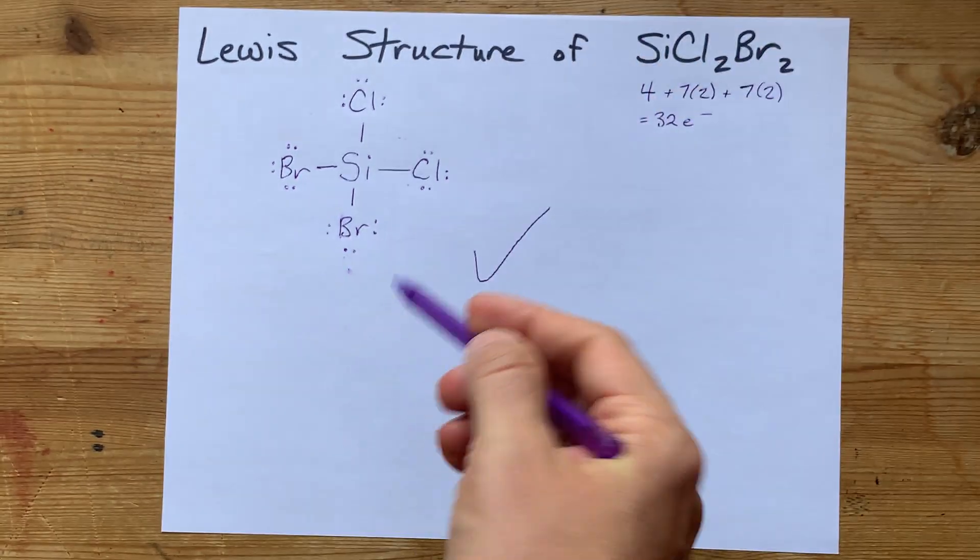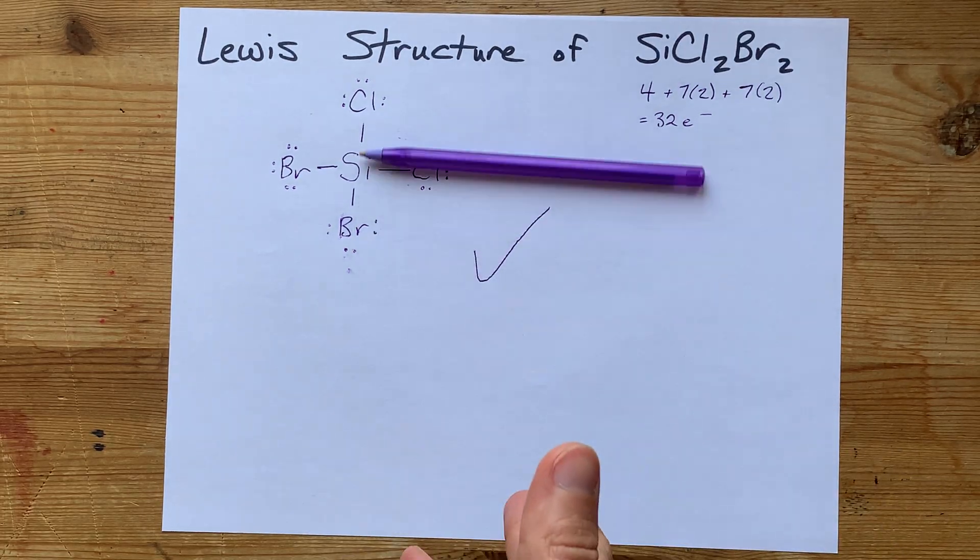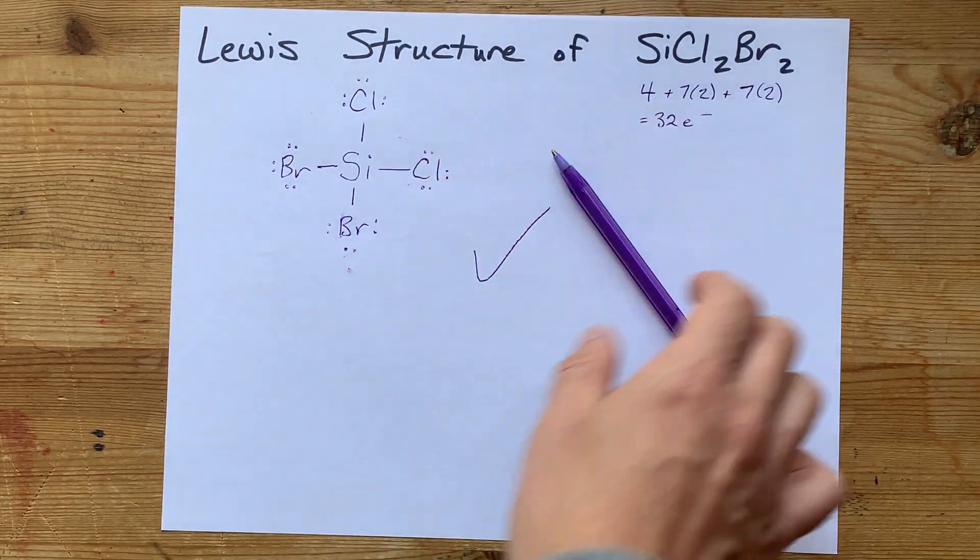This is the Lewis structure for dichlorodibromosilane. Thanks for being with me, and best of luck.